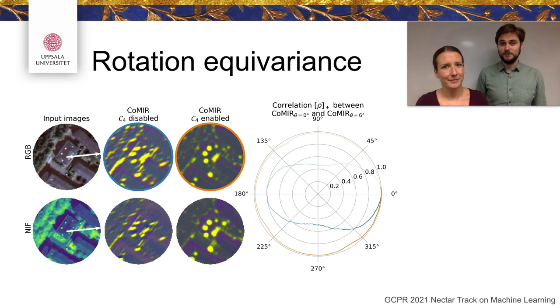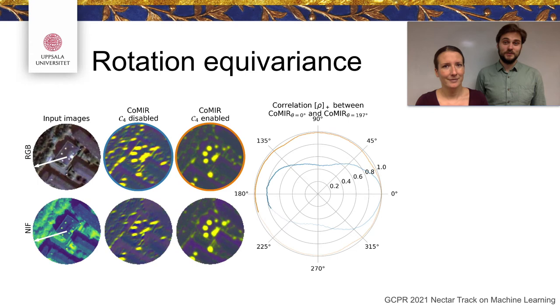Here we show a stabilized view of the input and CORMIERS. The polar plot also demonstrates that the correlation between CORMIERS with rotated and unrotated inputs is stable and close to 100% for all angles.